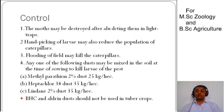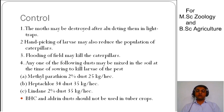If we talk about control, we can control them in many ways. The first method is using light traps to attract and kill the adult moths. With the hand picking method, we can collect and destroy larvae. If the initial infestation is low, hand picking can be an effective control measure.